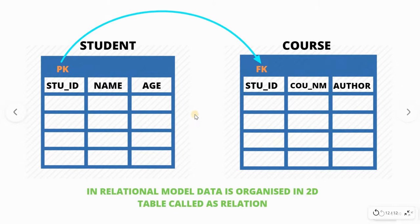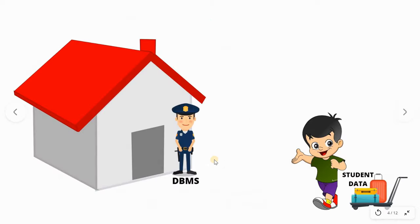In this model, data is organized in two-dimensional tables called relations. To samajhne ke liye ek example lete hain. Suppose karo ek godown hai, godown ke gate ke bahar is godown ka manager khada hai — yeh kaun hai? Yeh hai DBMS software. Yeh humko andar nahi jane de raha. Hum is godown ki services lena chahte hain aur hamare paas bohot saara samaan hai jo hum is godown mein rakhna chahte hain.